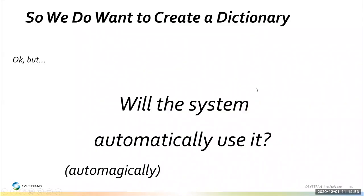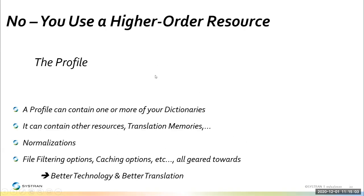So understanding that we want to use dictionaries — how do we create one, and will the system automatically use it? No, it goes to a higher-order resource before it decides which dictionaries to use. That's the profile. A profile can contain one or more dictionaries. It can also contain other resources like translation memories, normalizations, monolingual resources and dictionaries, filtering options, and caching to make it faster or to prevent certain things from being translated.